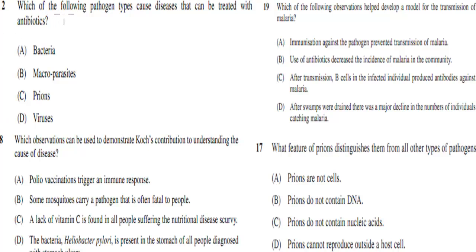The next question: which of the following pathogen types causes diseases that can be treated with antibiotics? A. Bacteria. B. Macroparasites. C. Prions. D. Viruses.